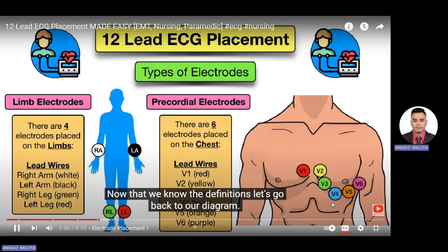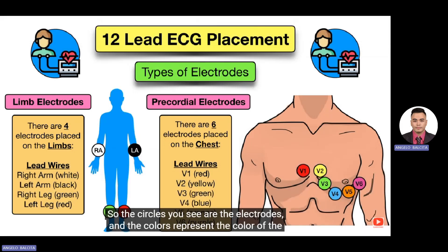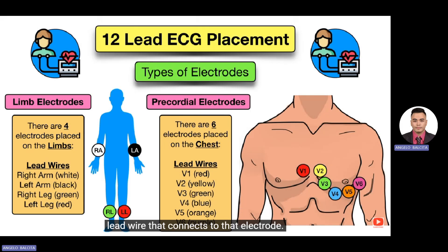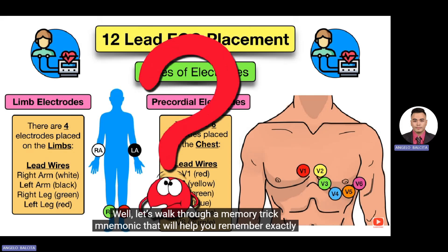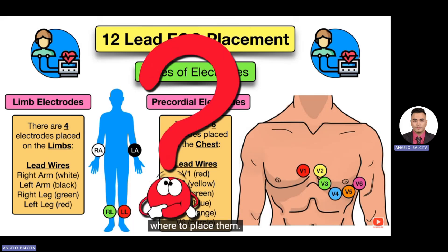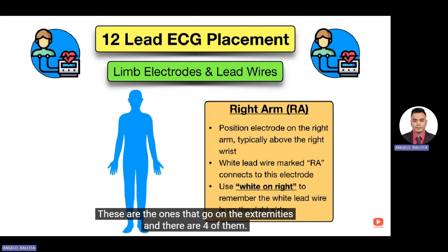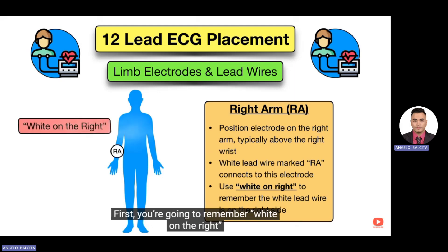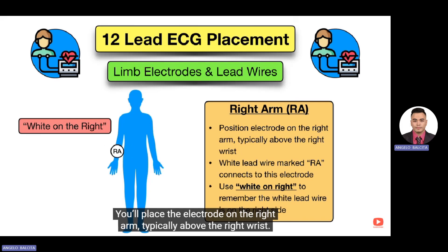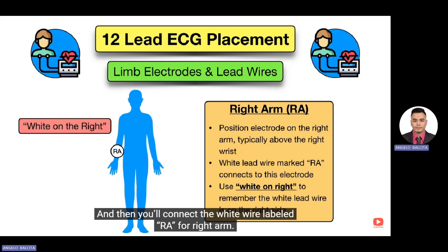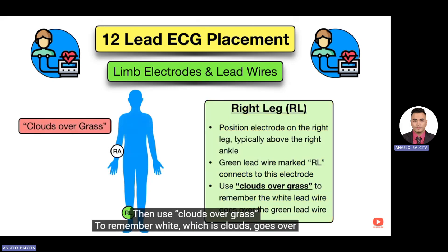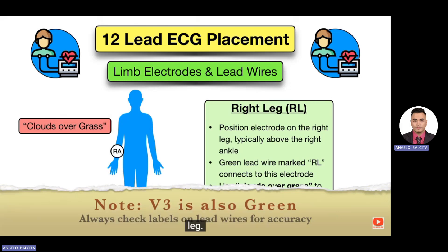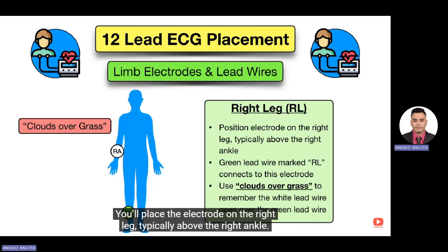Now that we know the definitions, let's look at limb electrode placement. First, remember 'white on the right' — the white lead wire goes on the right arm, placed typically above the right wrist, and connected to the wire labeled RA. Next, use 'clouds over grass' — white (clouds) goes over green (grass). Since white is the right arm, green is the right leg, placed above the right ankle and connected to the wire labeled RL.